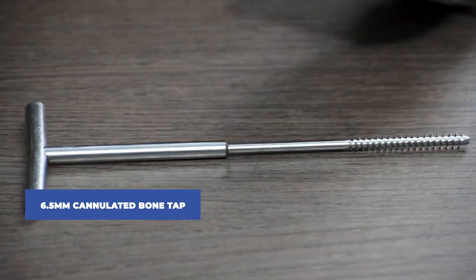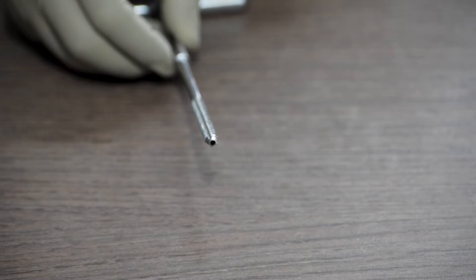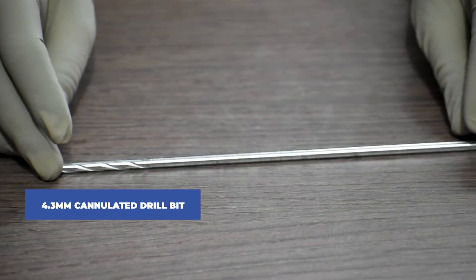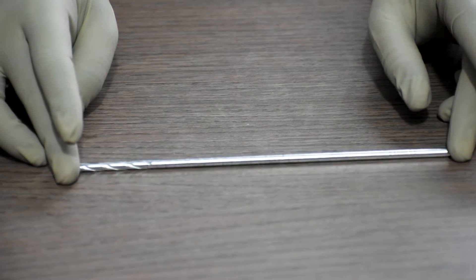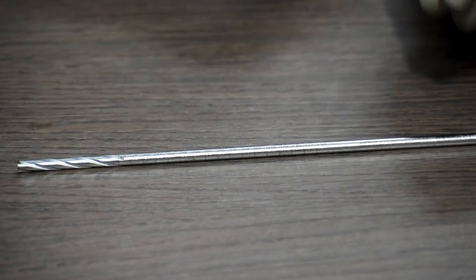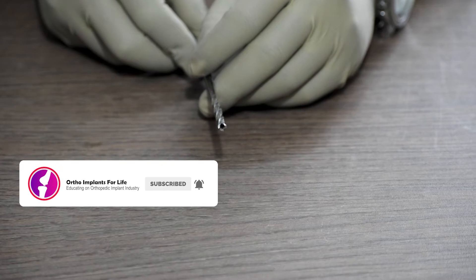Next, a 6.5mm cannulated bone tap is also required. Next, 4.3mm cannulated drill bit is required. It also has got markings in its surface in order to measure how deep it's drilling. See, here it is cannulated.